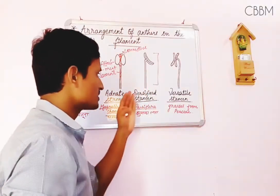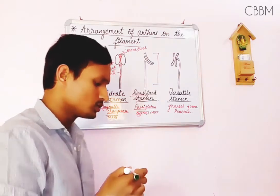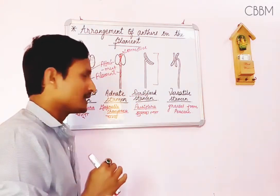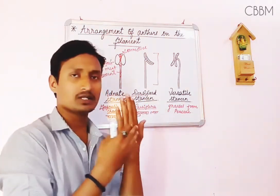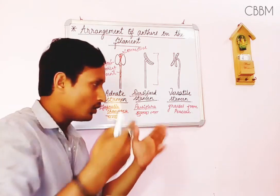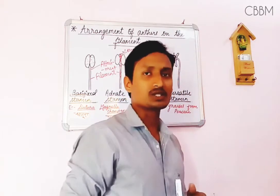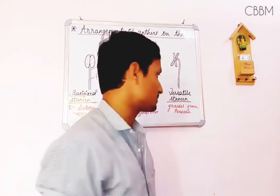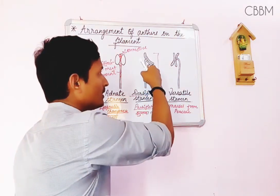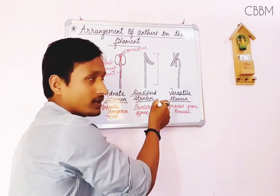Now, what does dorsifixed mean? There are two terms: ventral and dorsal. The palm side is ventral and the back side is dorsal. On the human body, the front is ventral, the back is dorsal, and the side is dorsiventral. In dorsifixed stamen, the filament is attached to the anther from its back point — the dorsal side — which is why it is called dorsifixed stamen.